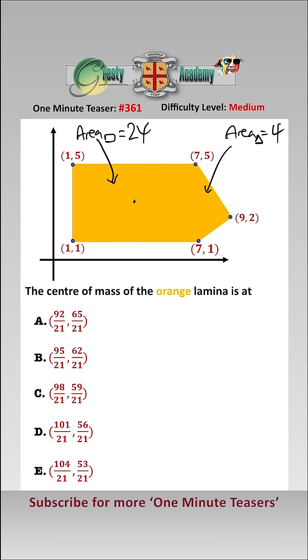By symmetry, we have the centre of mass of the rectangle is at 4, 3. And the centre of mass of the triangle is the average of the x-coordinates, 7 add 7 add 9 over 3, and the average of the y-coordinates, which is 5 add 1 add 2 over 3, which gives us a centre of mass of 23 over 3, 8 over 3.